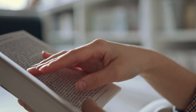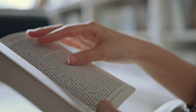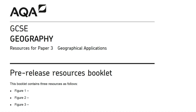As you can see from the front of the pre-release, there are three sections to the booklet. Figure one contains data and information about the geographical theme of the issue. Figure two contains specific information about the issue, and figure three typically contains the views of different groups and individuals about the issue.